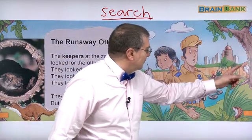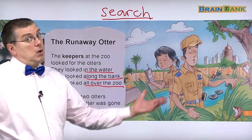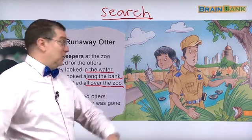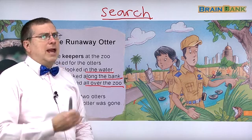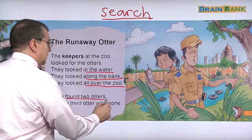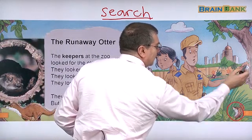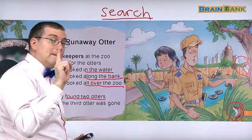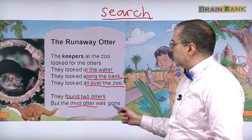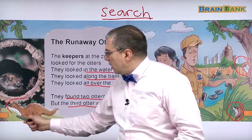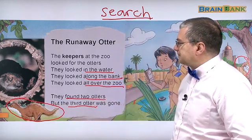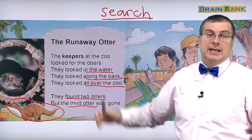They probably looked in the zebra's home — no otters. The elephant's home — no otters. The lion's home — no otters. But the lion didn't look happy. They found two otters — there's one here and one here. But the third otter was gone. The third otter escaped. They couldn't find him.